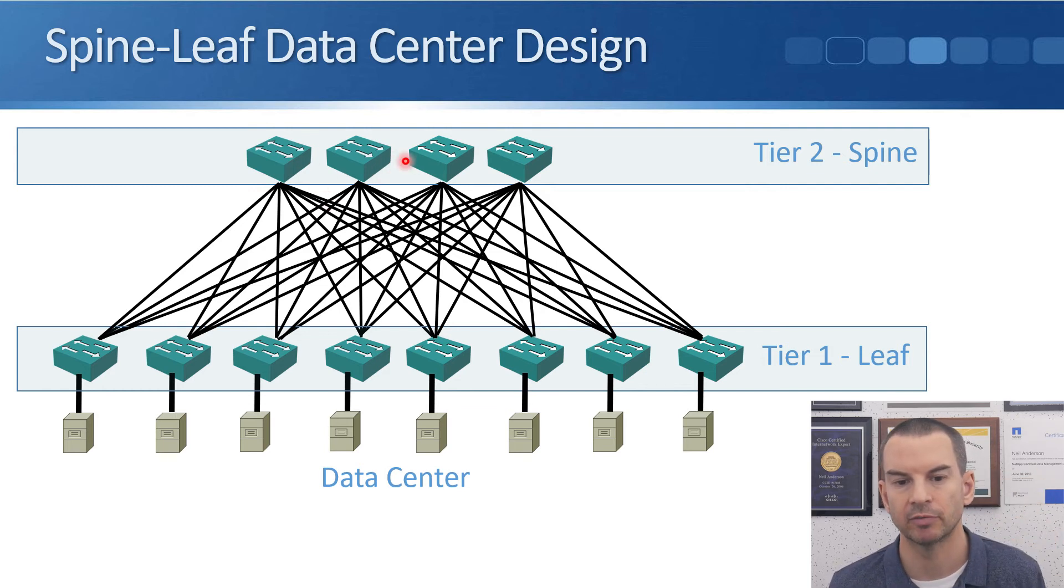Our servers are connected into our leaf layer switches and we have a mesh between them, so all of our leaf switches are connected to all of our spine switches. And as I said, it's really easy to scale this out just by adding additional switches in the east and west direction.